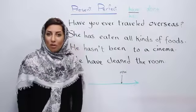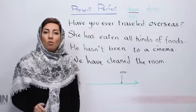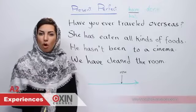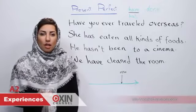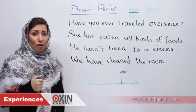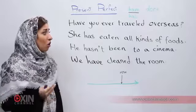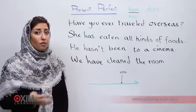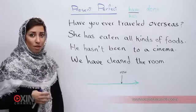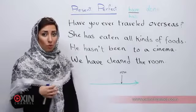Hello everyone and welcome to Oxen Channel. Today we want to talk about the grammar present perfect. Look at the examples: Have you ever traveled overseas? She has eaten all kinds of foods. He hasn't been to a cinema. We have cleaned the room.